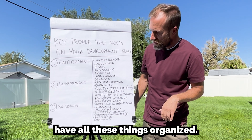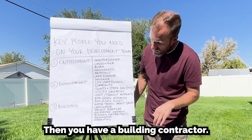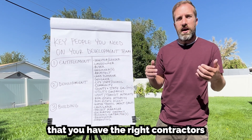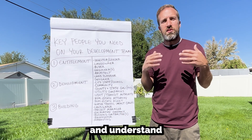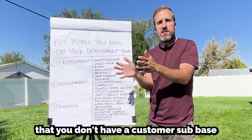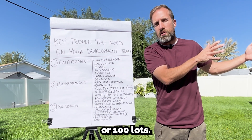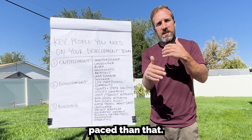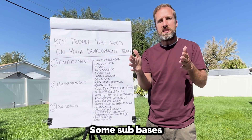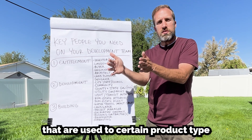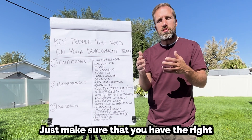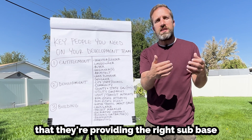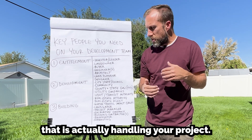You want to make sure you have the right building contractors and their sub base. Understand that when you're doing 60, 70, or 100 lots, you need something fast-paced — not a custom sub base. Some sub bases are used to certain product types and not others. Just make sure you have the right contractors involved who are providing the right sub base that can actually handle your project.